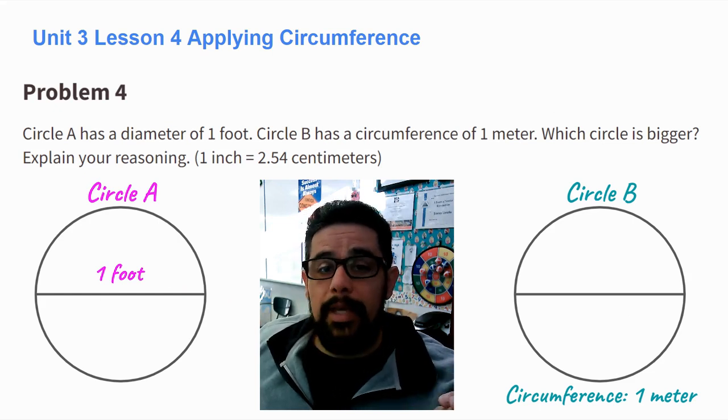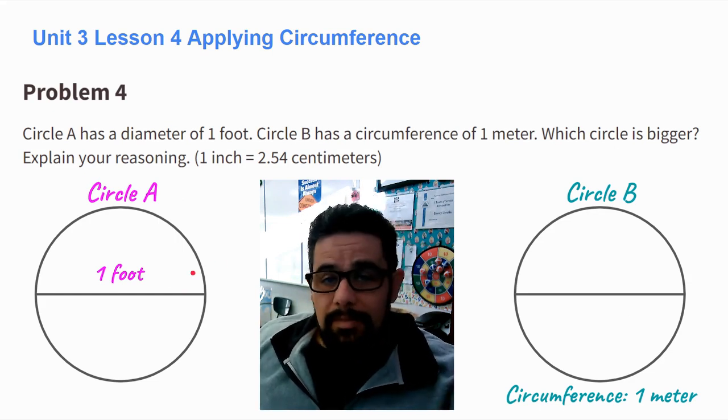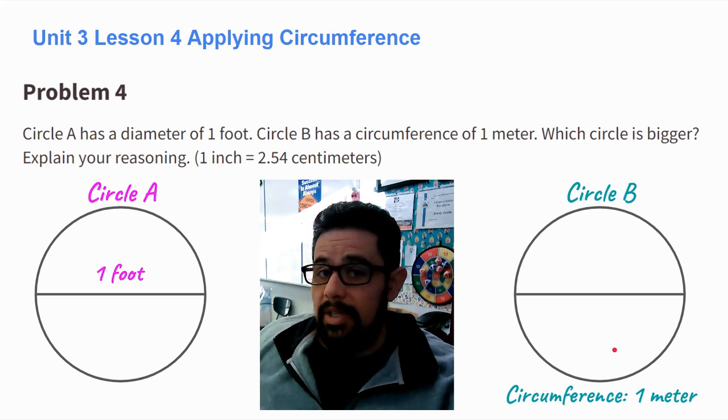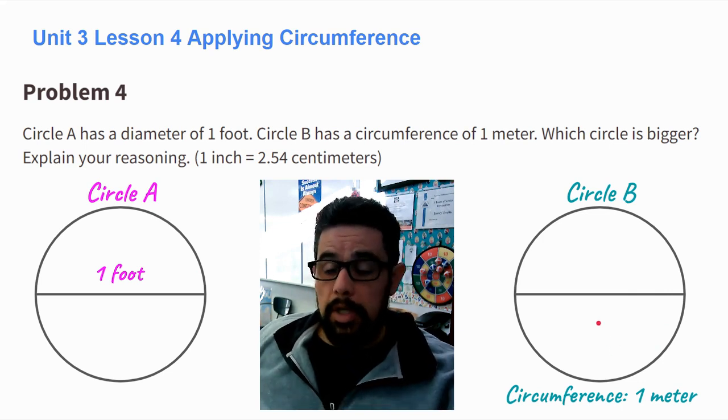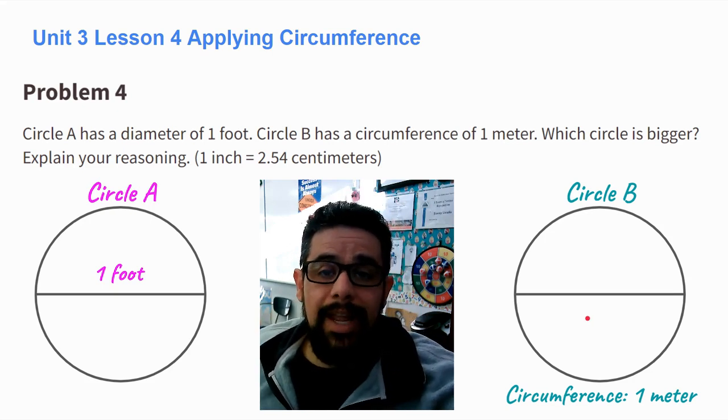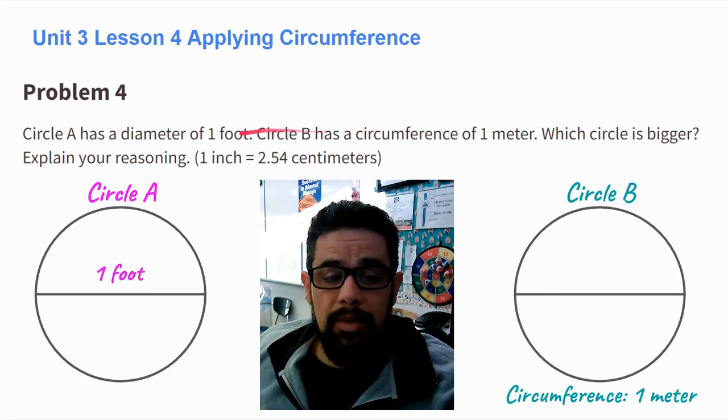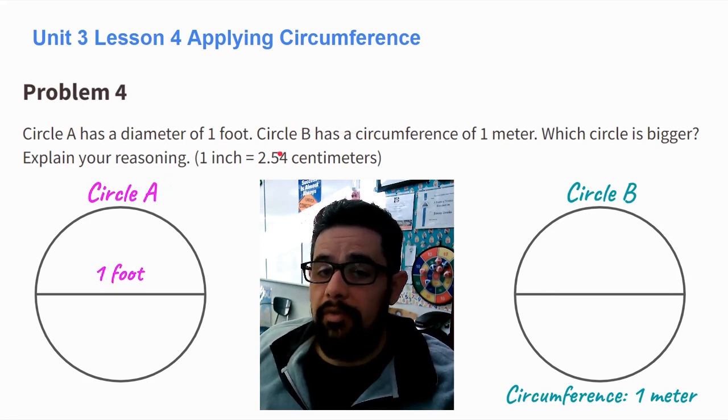The extra step here is that we are also given different units of measure. So circle A is measured in feet and circle B is measured in meters. So what we're going to do is relate both circles to the same part and convert the units to the same units using this: one inch equals 2.54 centimeters.